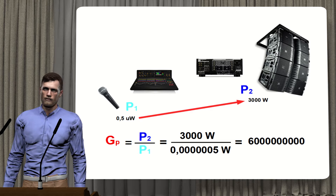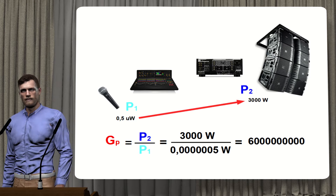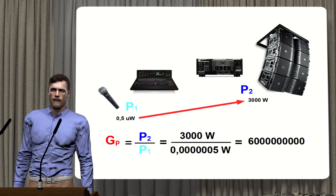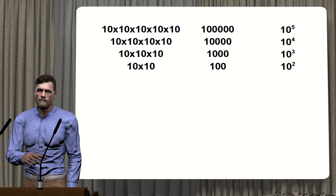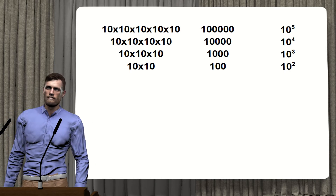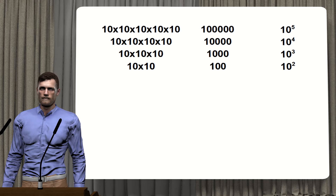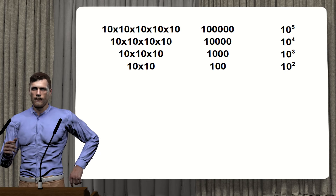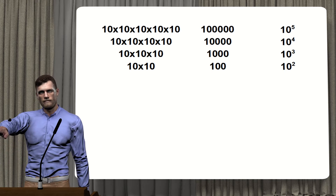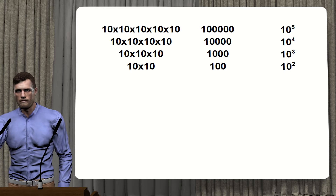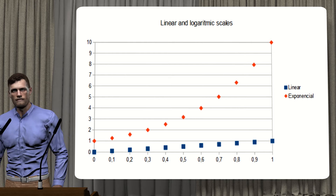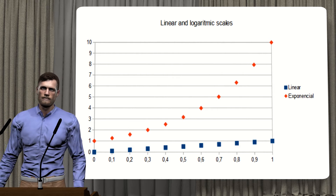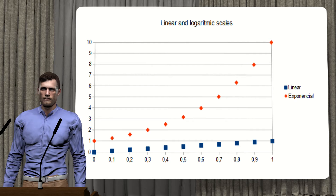Now that we have seen the concept of comparing two signals and the difficulty of handling very different values, let's recall some simple maths from school. If I ask how much 10 by 10 is, the answer is 100; and 10 by 10 by 10 is 1000. We are talking about powers of 10. When we raise 10 to an increasing exponent, the result grows much faster than the exponent itself — that is why we say it has an exponential growth, which is much faster than a linear growth.